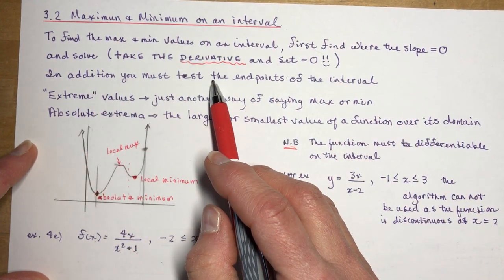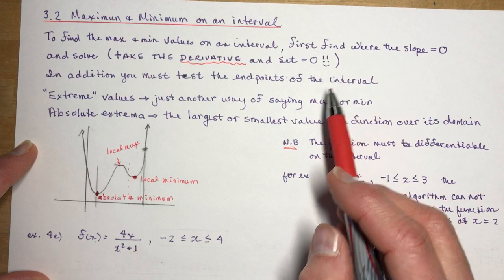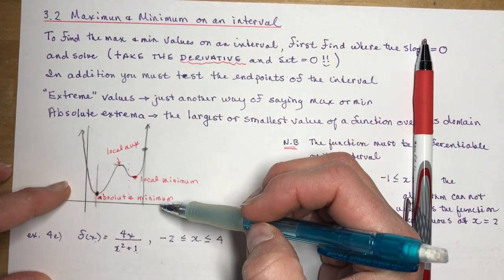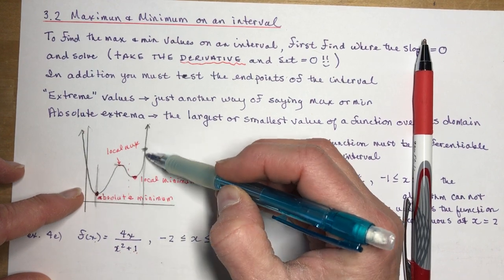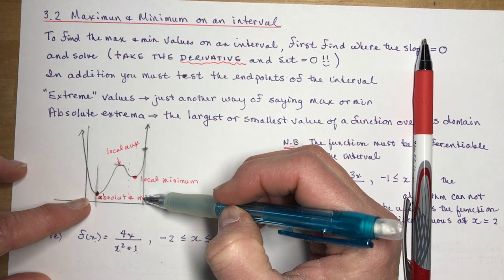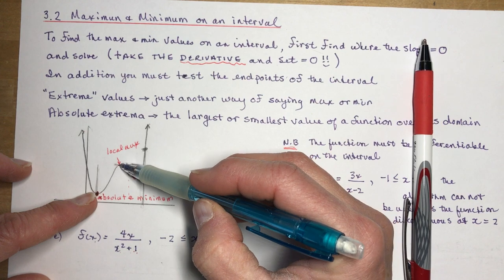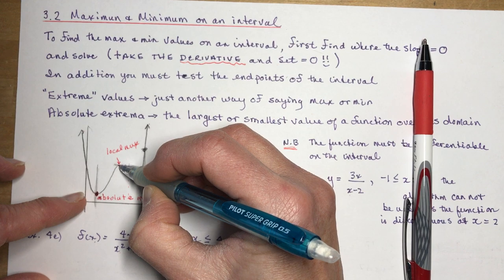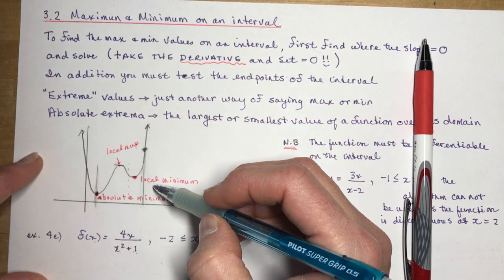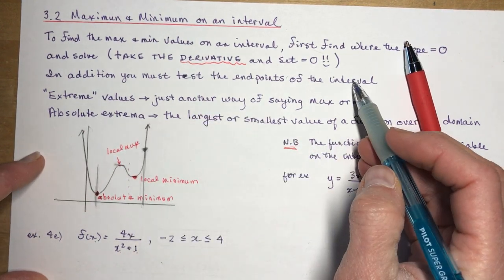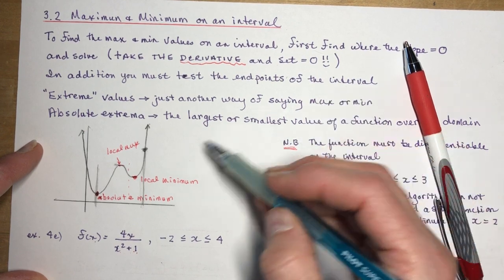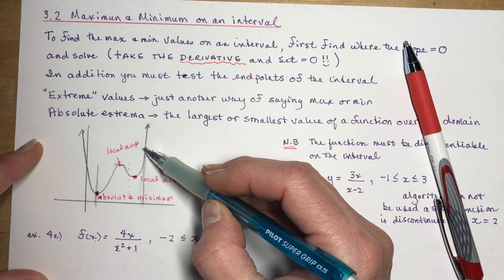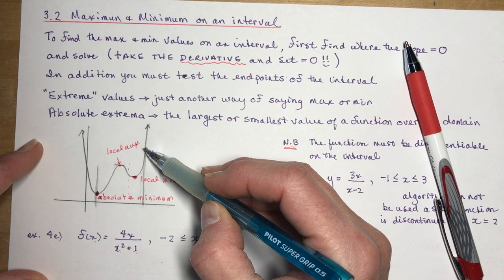In addition, you must test the end points of the interval. So if I had an interval that was between, so this is my graph, if I said between this line here and this line here, you would see that you would have a max and a minimum, but you would also have a high point right here that would be higher than this one. So you have to check what the interval is and test those end points to see if they are higher than where the slope is zero because the slope obviously would not be zero here.